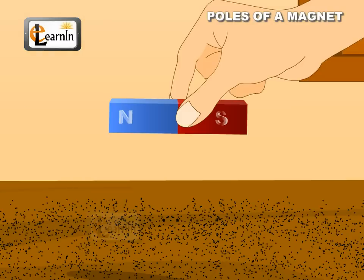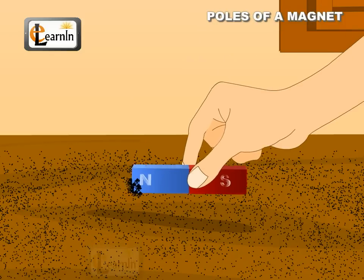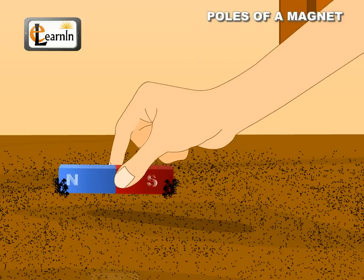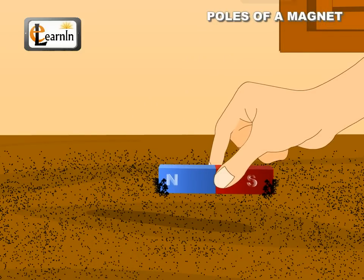Now remove the iron filings from the magnet and repeat the process. Again, the iron filings are only attached at the ends of the magnet.